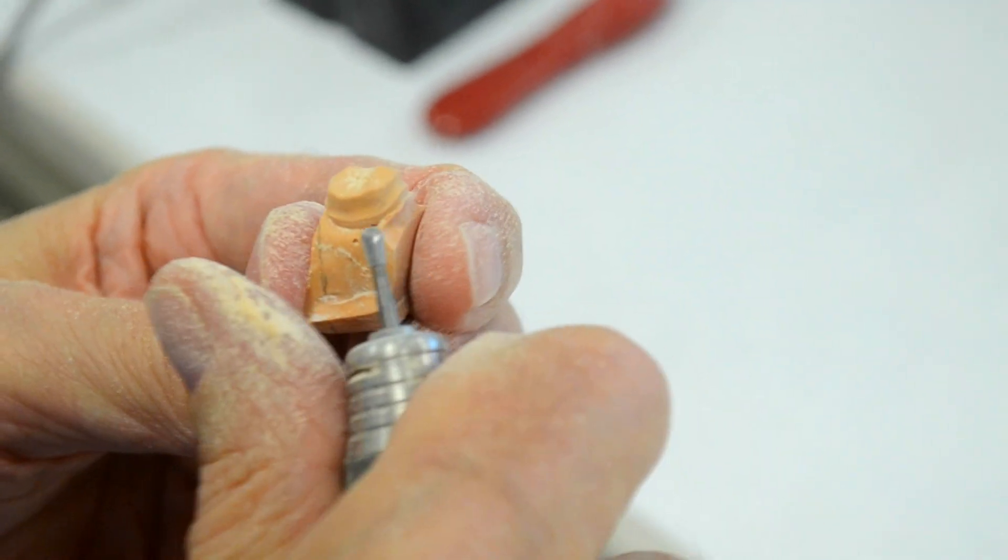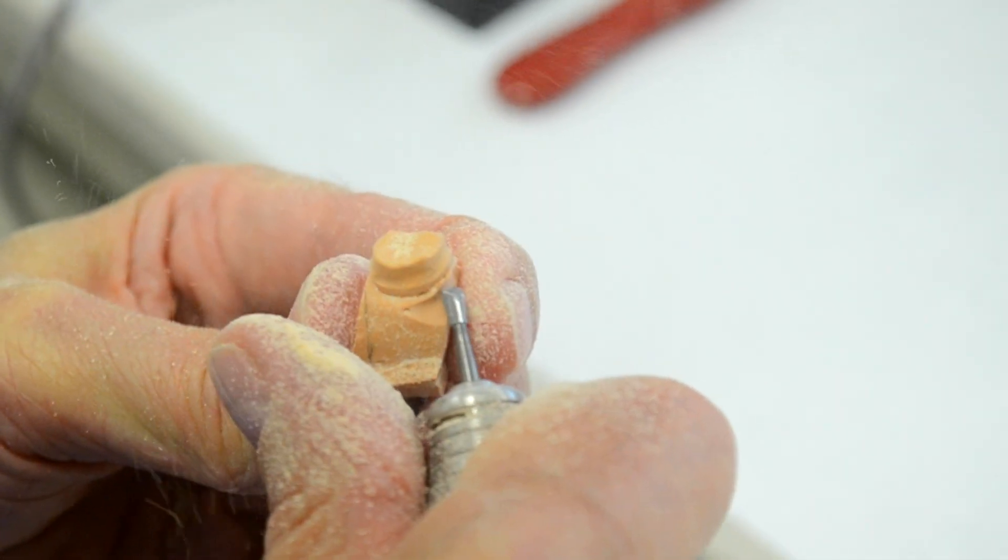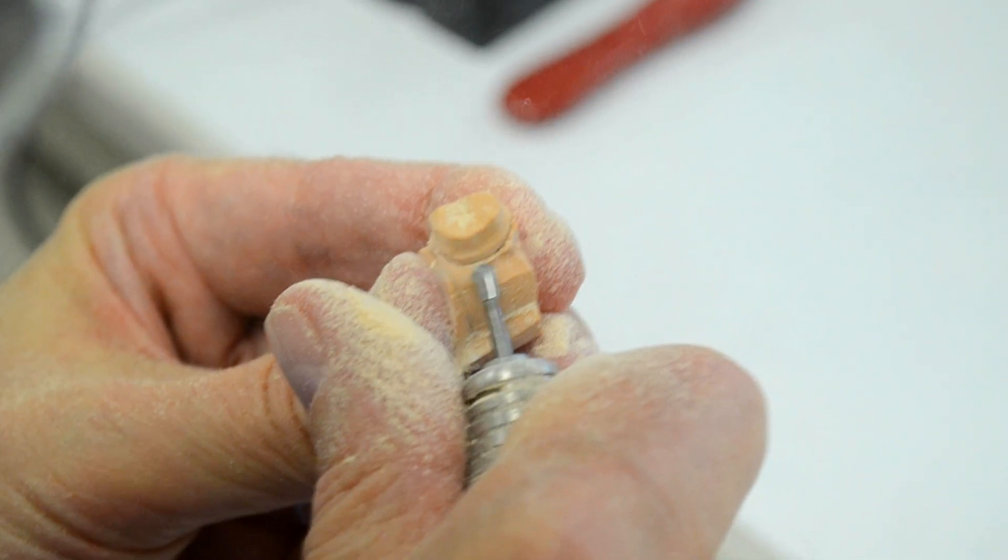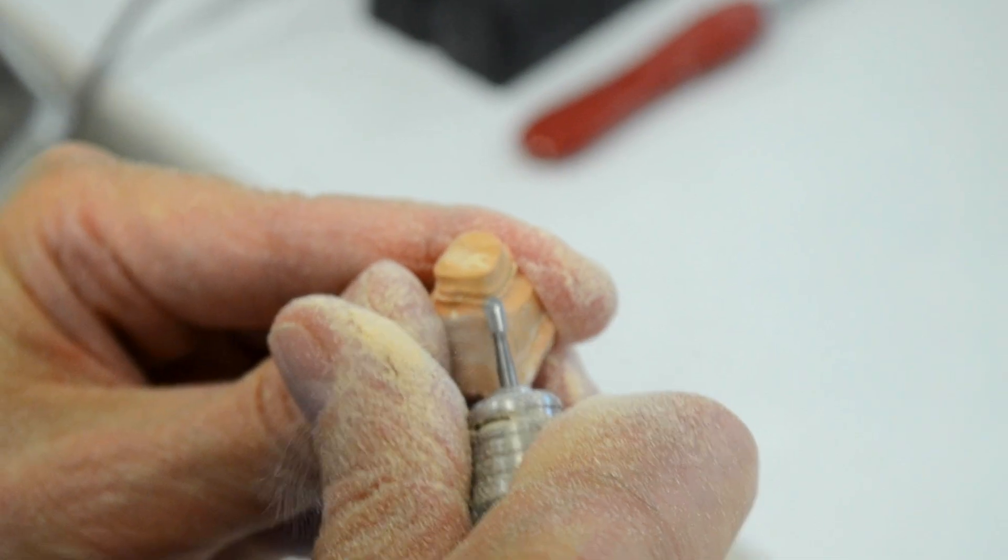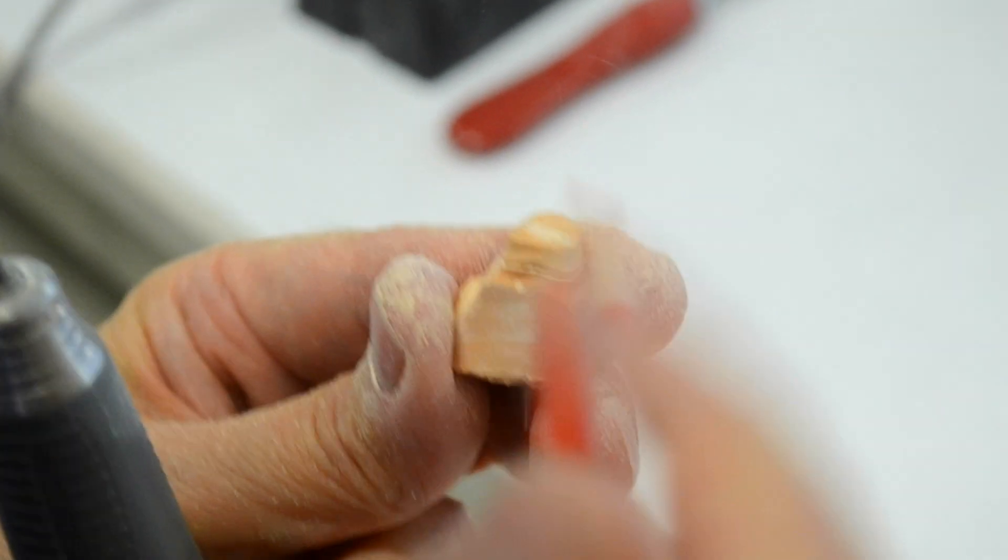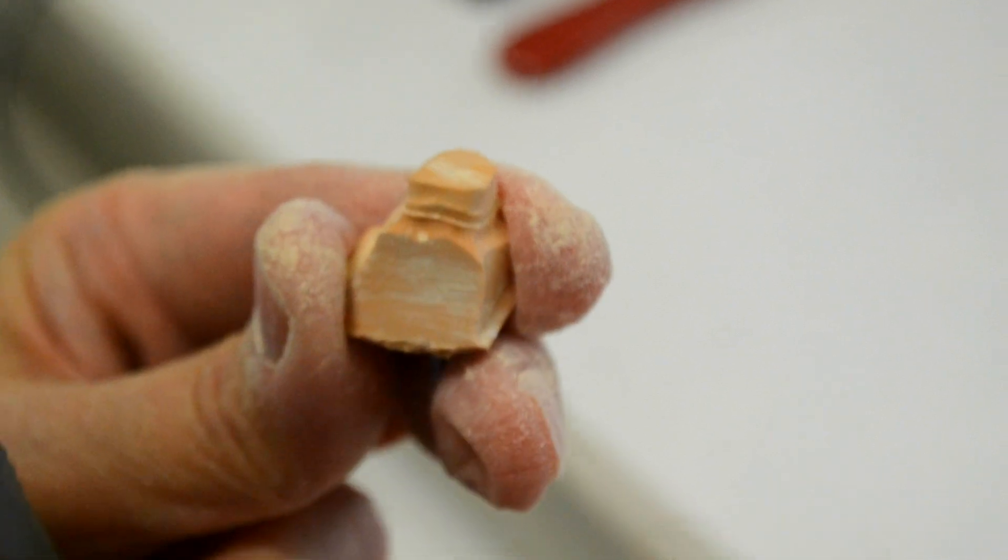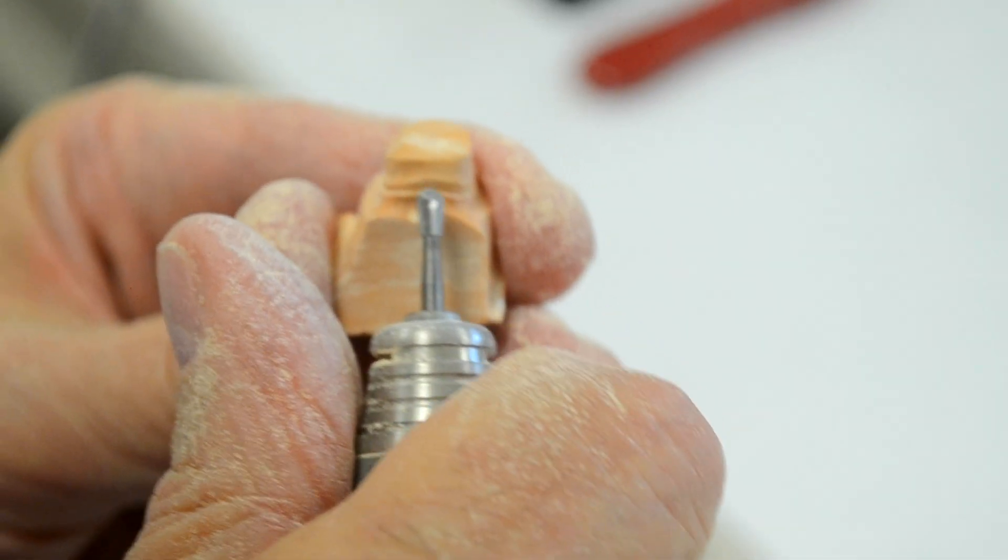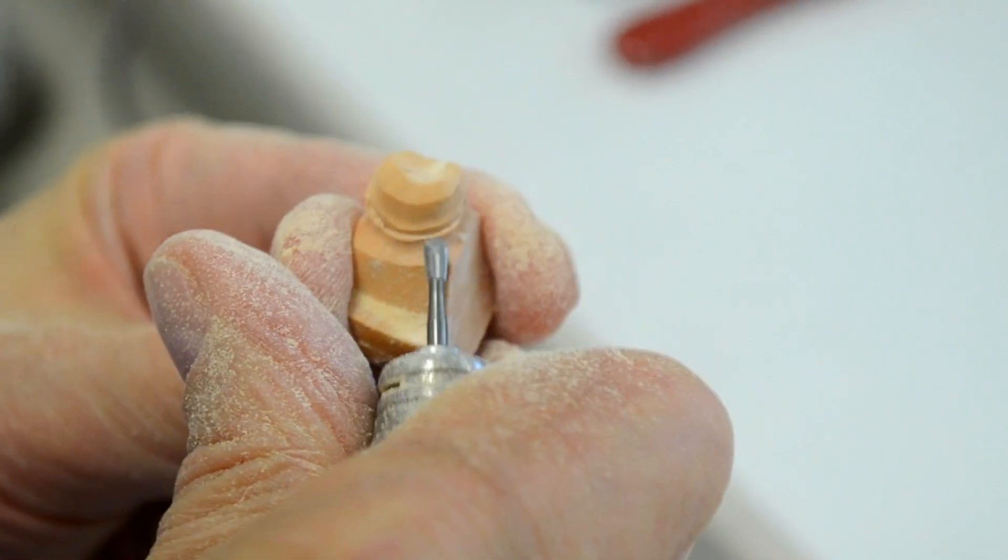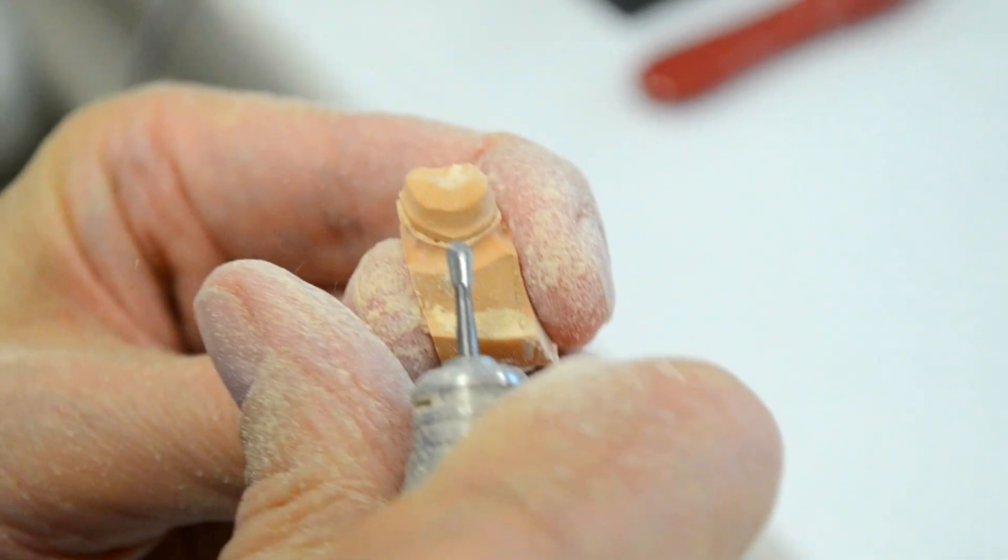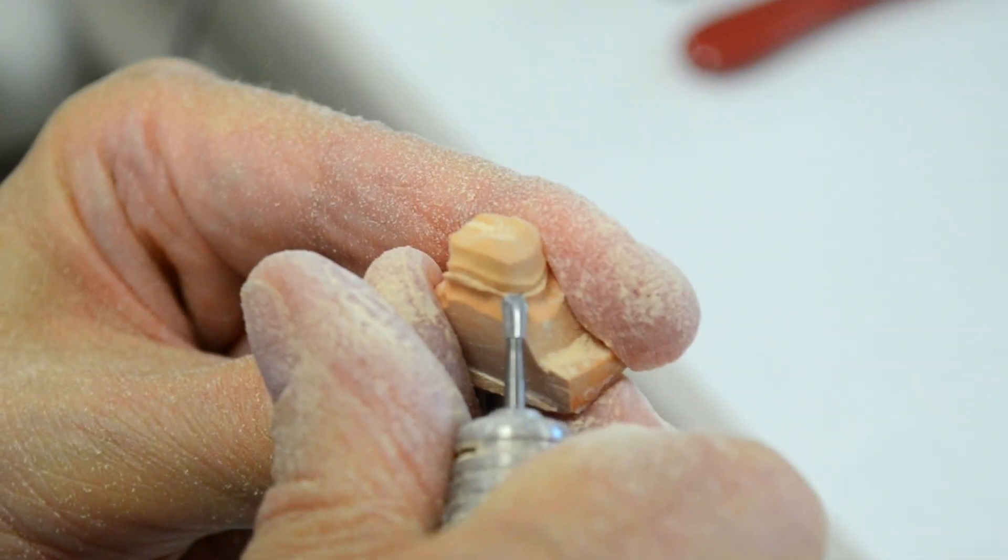Essentially what we're doing is we're undermining the stone that comprises the free gingival margin. By undermining the stone, as you can see, we're left with a small lip of gypsum here that represents the free gingival margin. Again, I continue to undermine this area without going anywhere near closer than about two to three millimeters of the finish line on the tooth preparation.